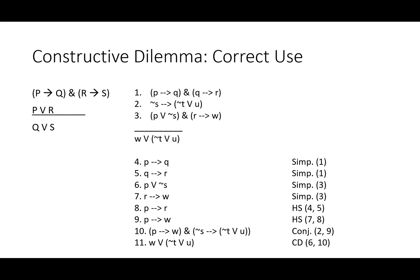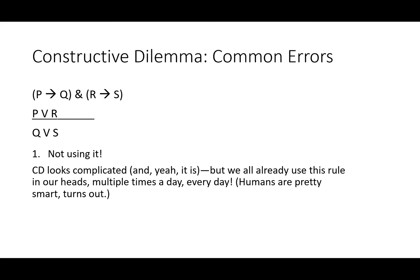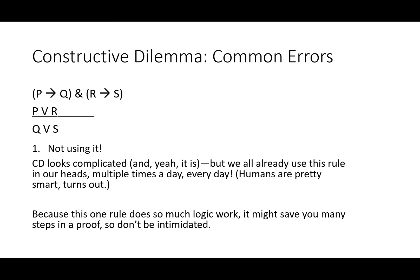Which brings us to the main error with constructive dilemma: not using it. It looks complicated, and indeed it is, but we all already use this rule in our heads multiple times a day, every day. Humans are pretty smart, it turns out. Whether you're ordering food and thinking about the consequences, whether you're voting and thinking about the policies the candidates support, or whether you're thinking about which class to take and what kind of exam you're going to have to face at the end of it, you're probably using some constructive dilemmas. Because this one rule does so much work in symbolic logic, it might save you quite a few steps in a proof. So don't be intimidated. Take the time to learn how to use constructive dilemma, and you'll get your time back on the homework and in the quizzes later on.